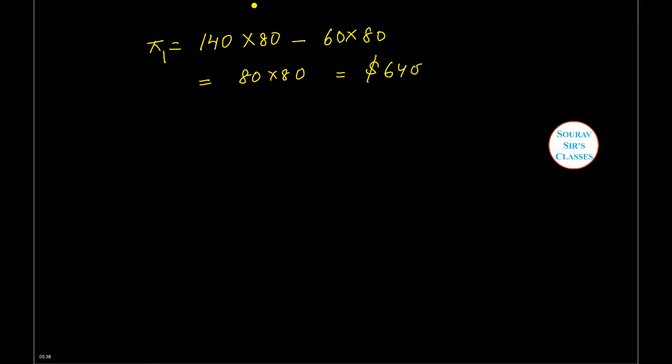To calculate the profit: profit equals total revenue, which is 140 (the price) into quantity, less the total cost, which is 60Q1. So 140 × 80 minus 60 × 80, which is 80 × 80 = $6,400.